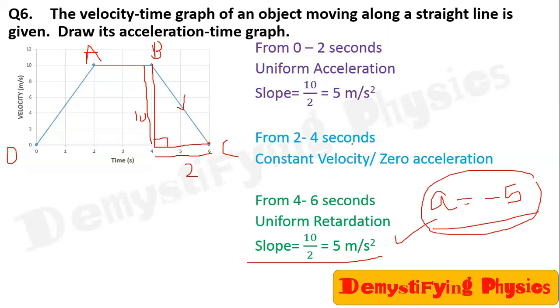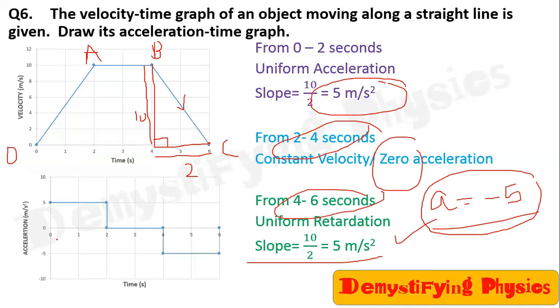Now plot this on the acceleration-time graph. So from 0 to 2 seconds, acceleration is plus 5. From 2 to 4, acceleration is 0. From 4 to 6 seconds, acceleration is minus 5. Plot it and you will get this graph.